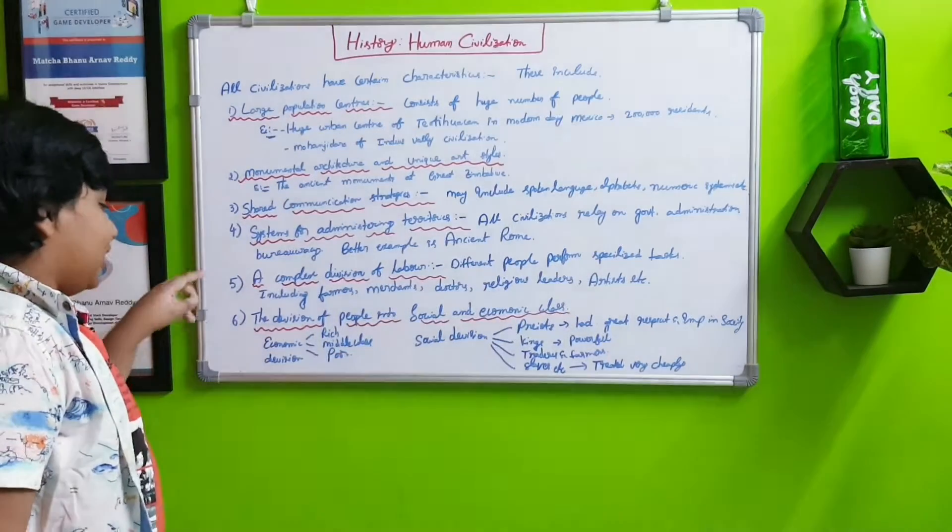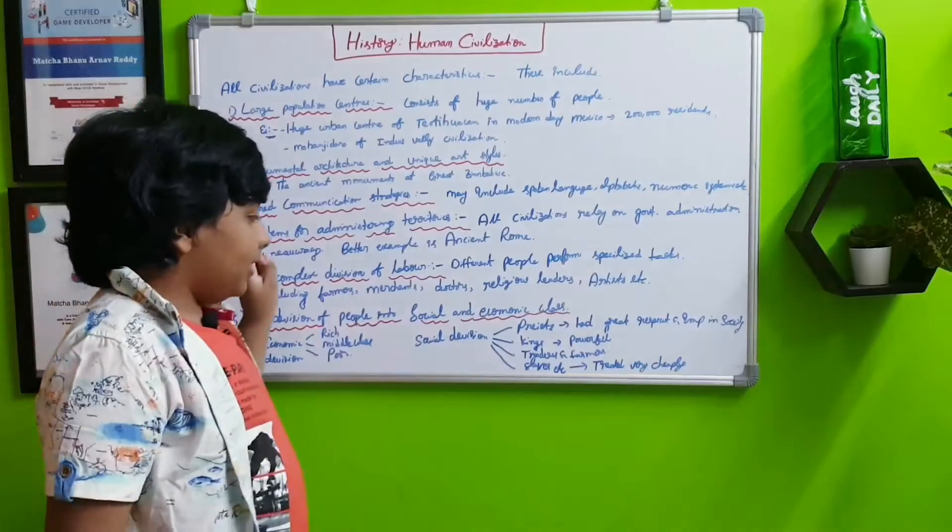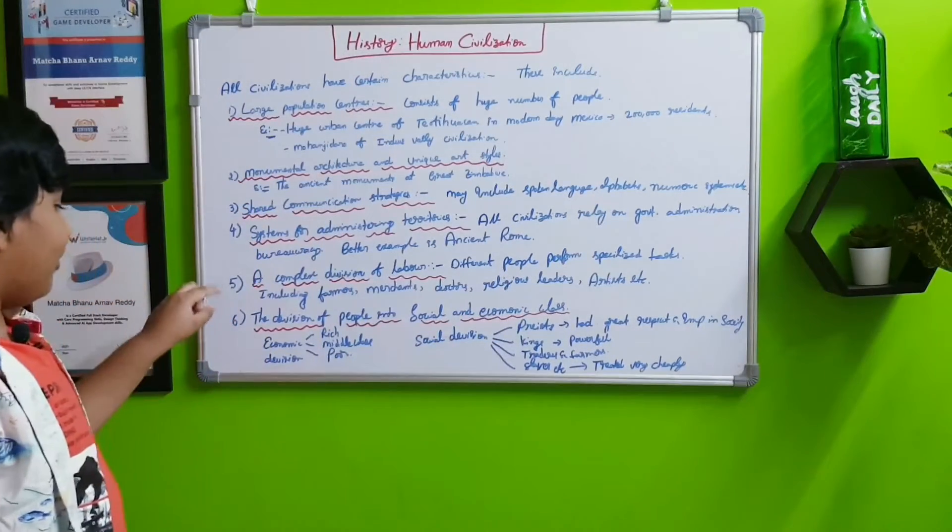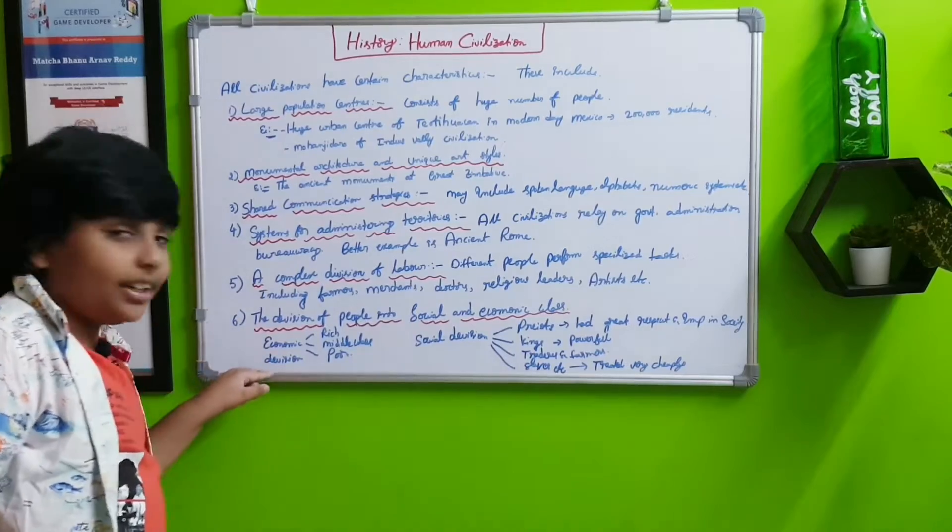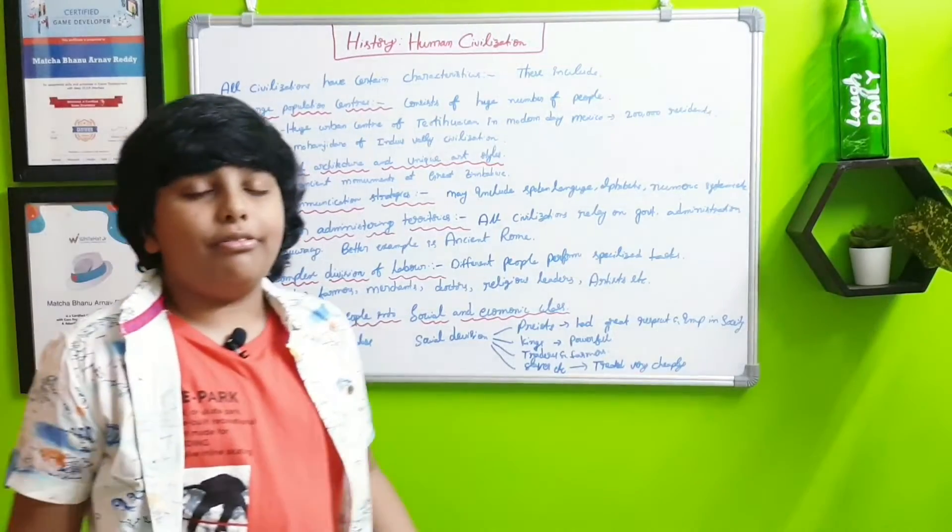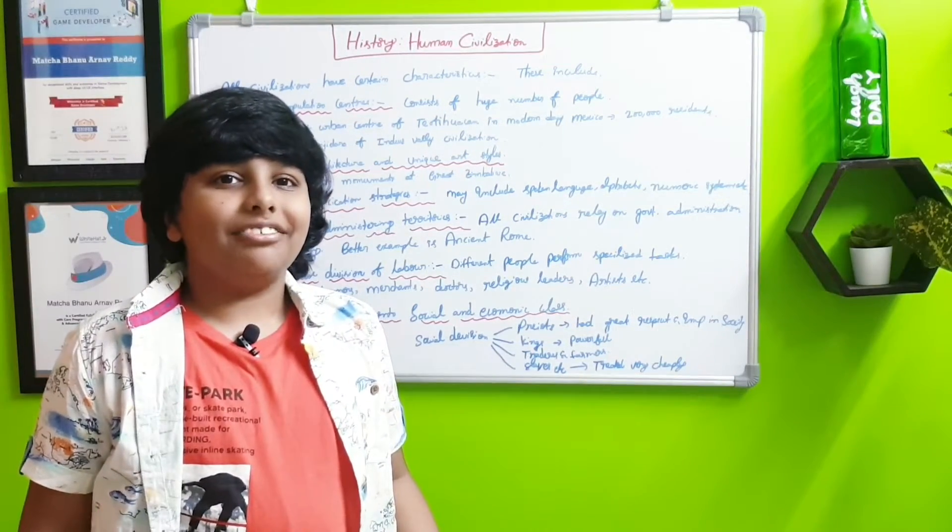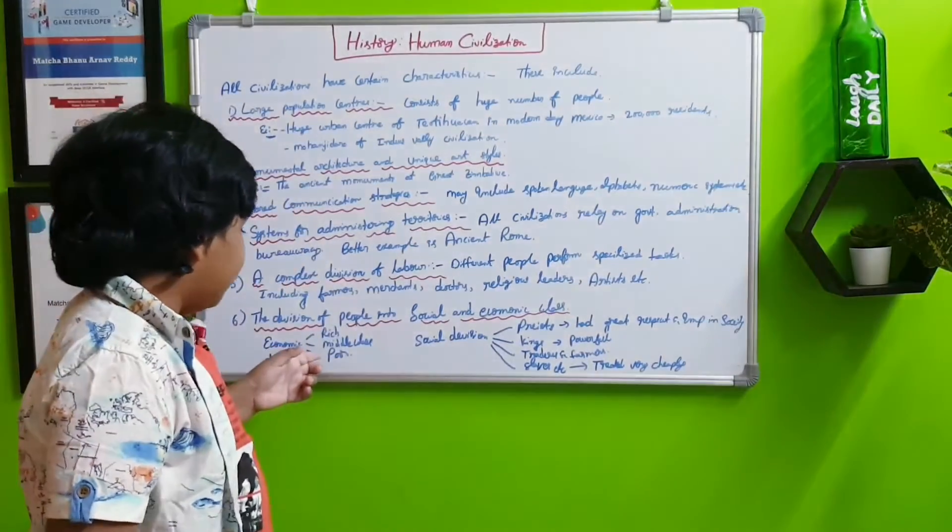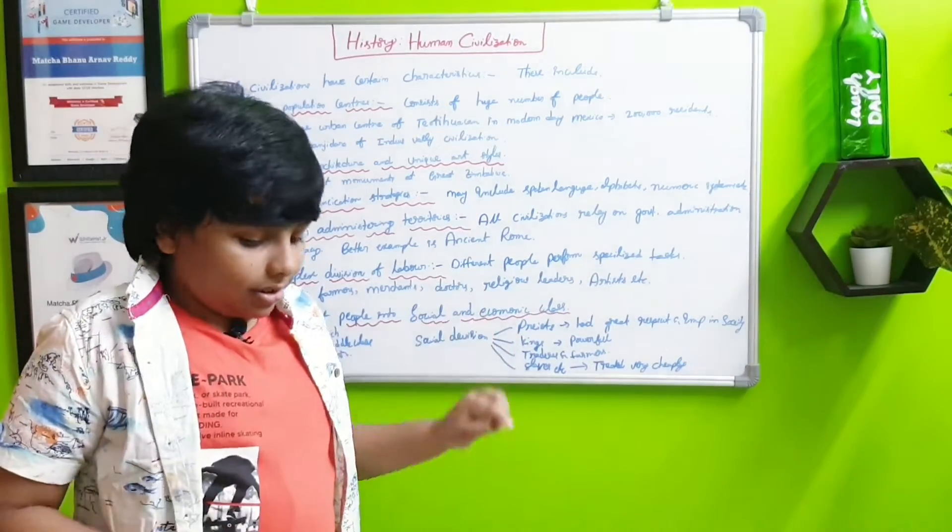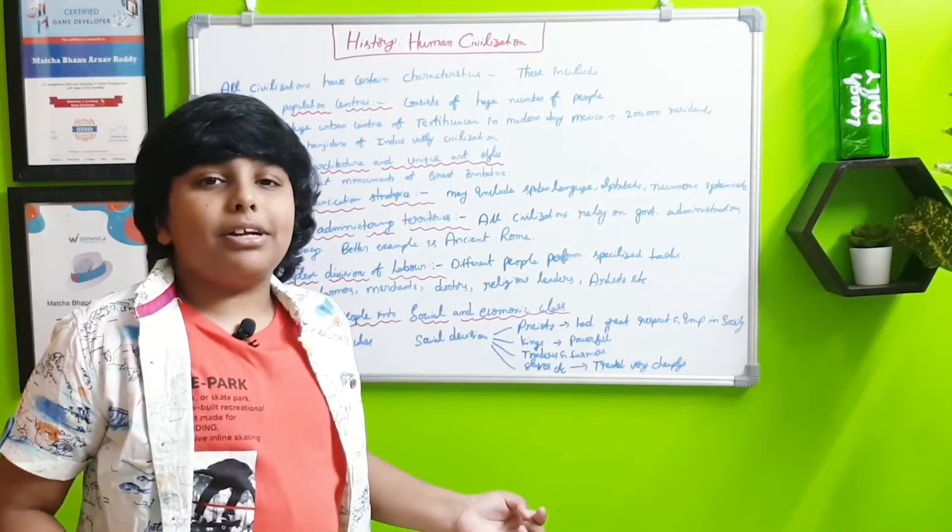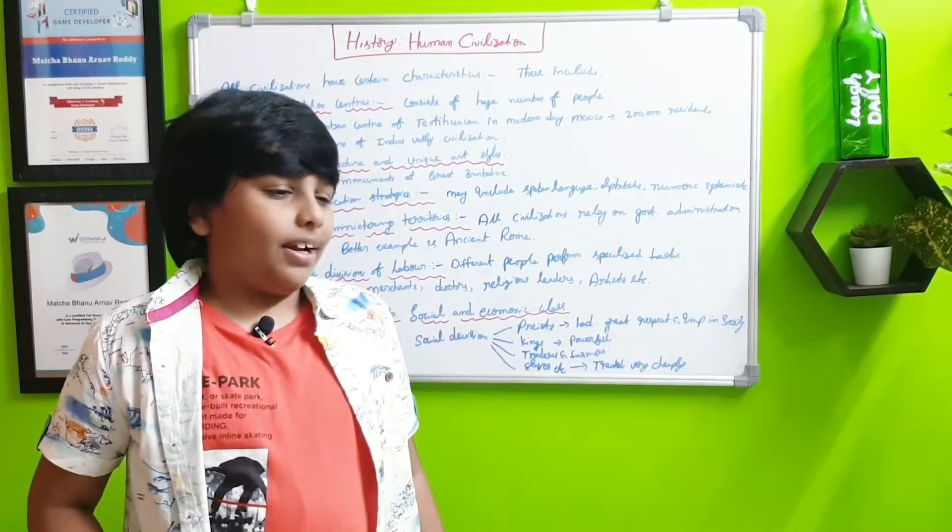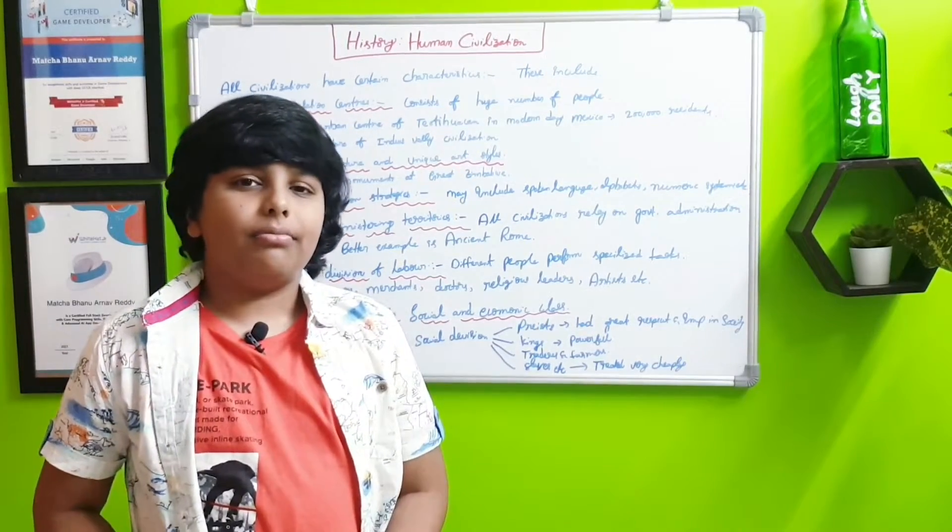Next, the sixth term, which is the last one: the division of people into social and economical classes. The first is the economic division which was rich people, middle class, and poor. Rich people were people who are rich, you can easily guess. The next is middle class who are between poor and rich. That means they are not respected that much, but they still have money. And finally are poor. They are like beggars. They just don't have much money.